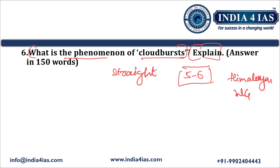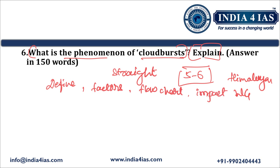There were chances of UPSC asking about cloudbursts either in the geography part or in the disaster management part. This year it was asked in the geography part of GS1. Since the directive word is 'explain', we have to address all dimensions of cloudbursts: its definition, the factors or causes responsible for its formation, the mechanism of formation in a flowchart fashion, and the impact of cloudbursts. The question is for 10 marks and 150 words.